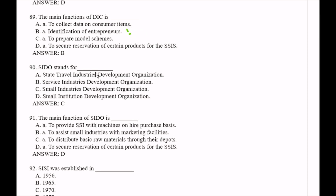Question number 90: SIDO stands for — Option A, State Tribal Industries Development Organization; Option B, Service Industries Development Organization; Option C, Small Industries Development Organization; Option D, Small Institution Development Organization. The right answer is Option C, Small Industries Development Organization.